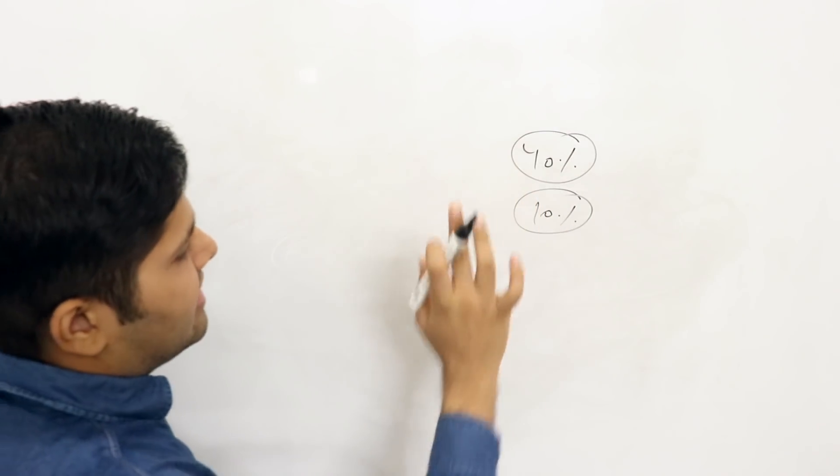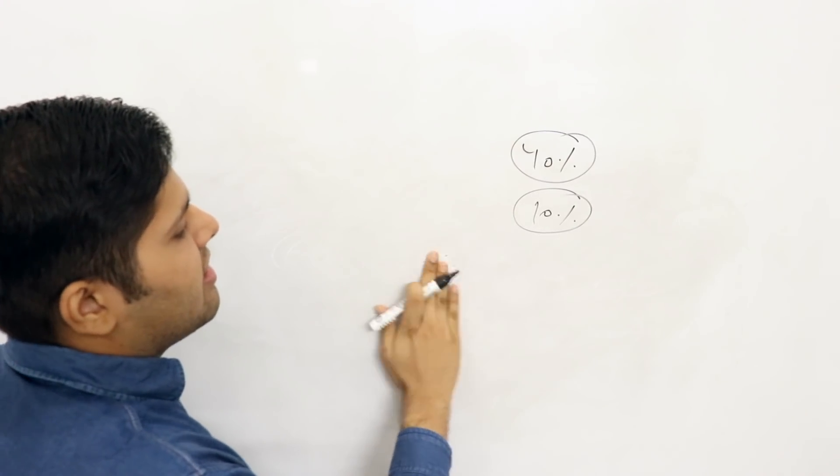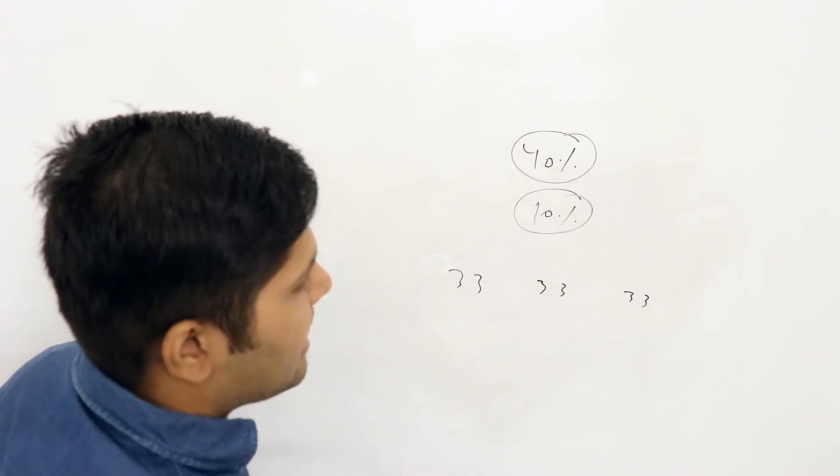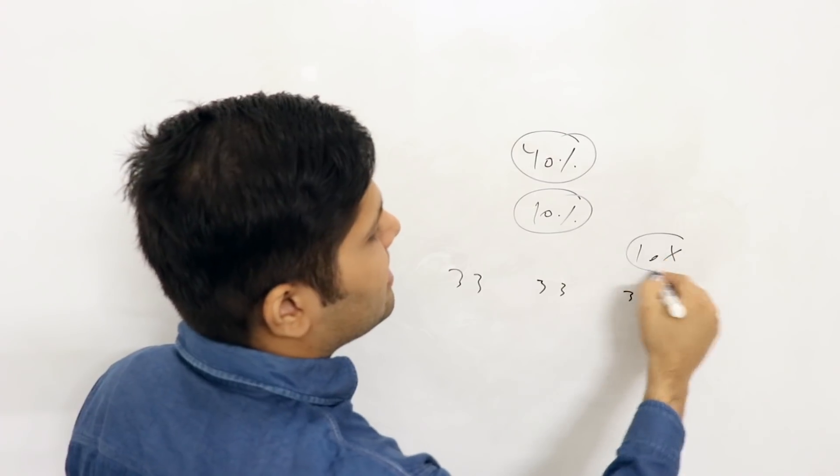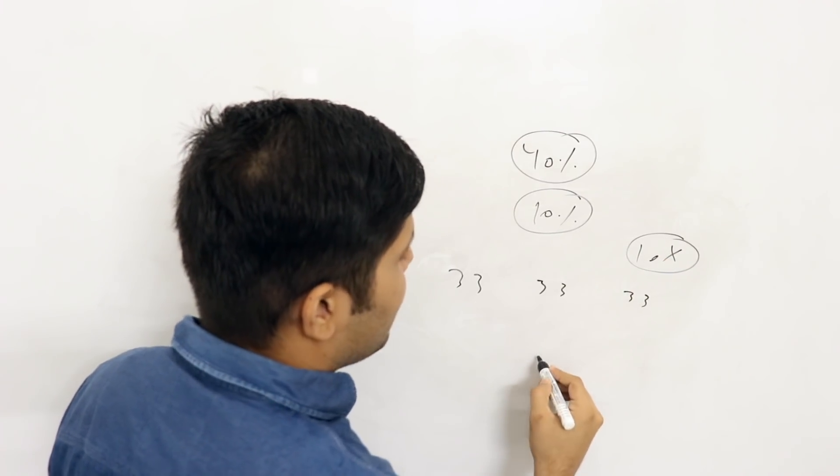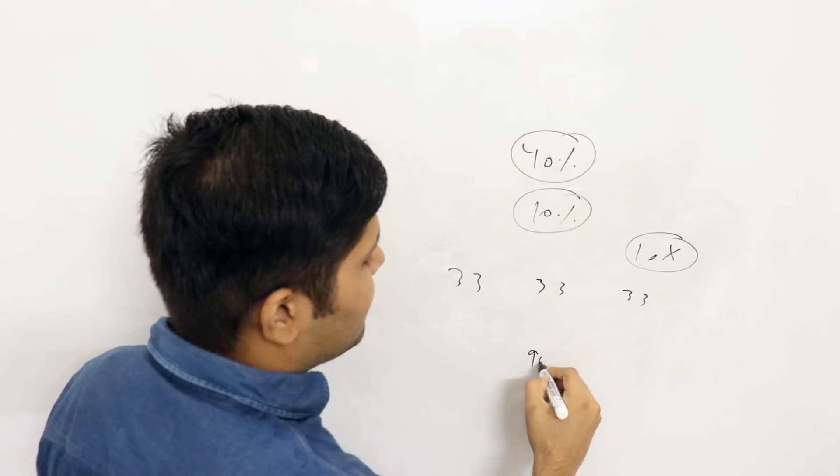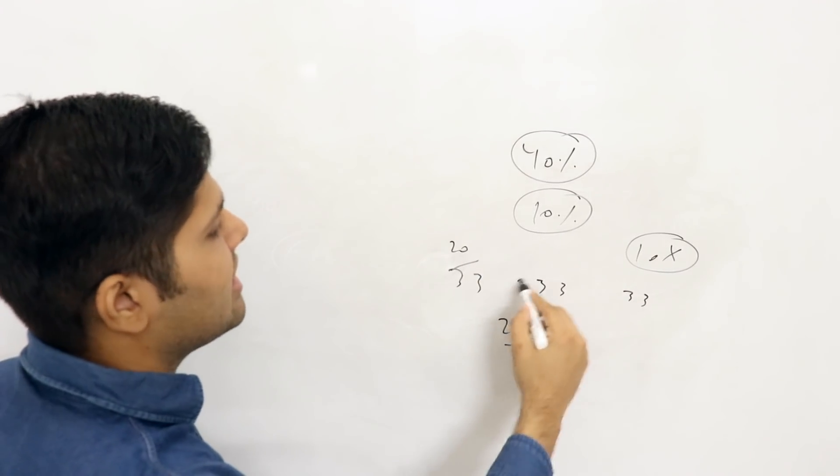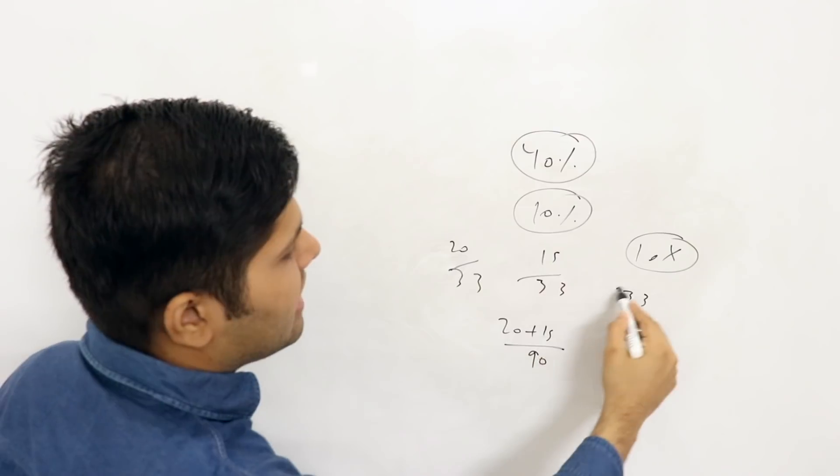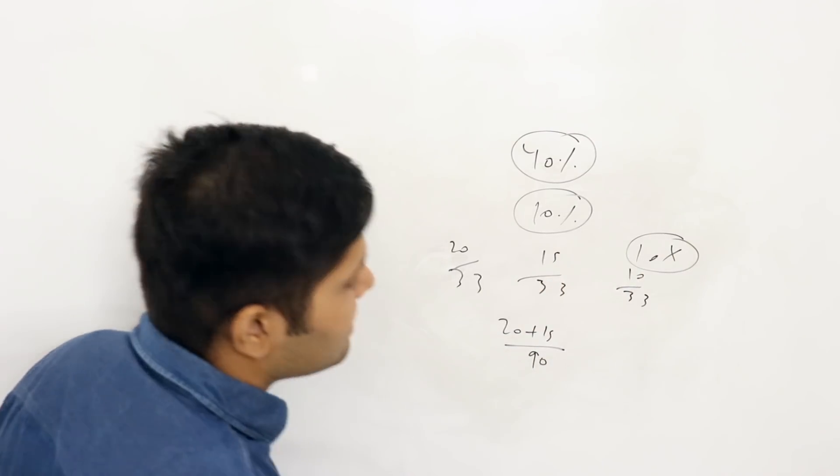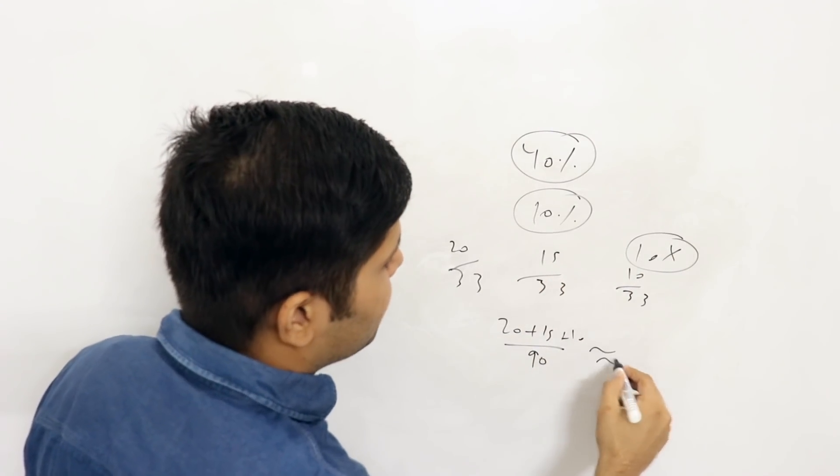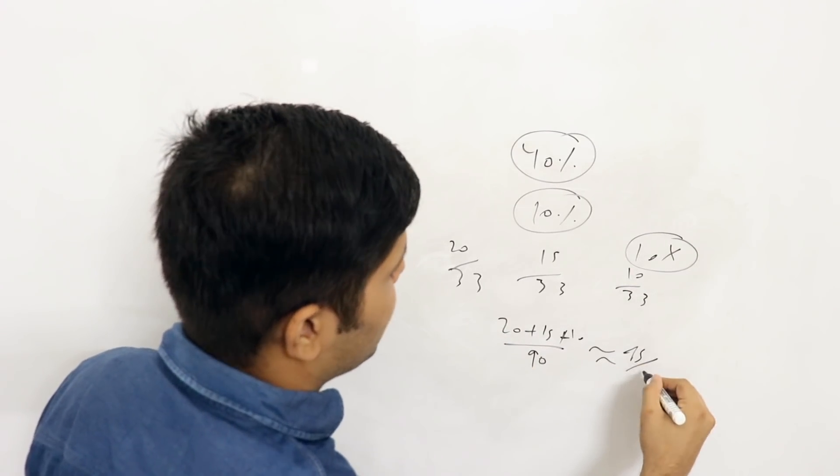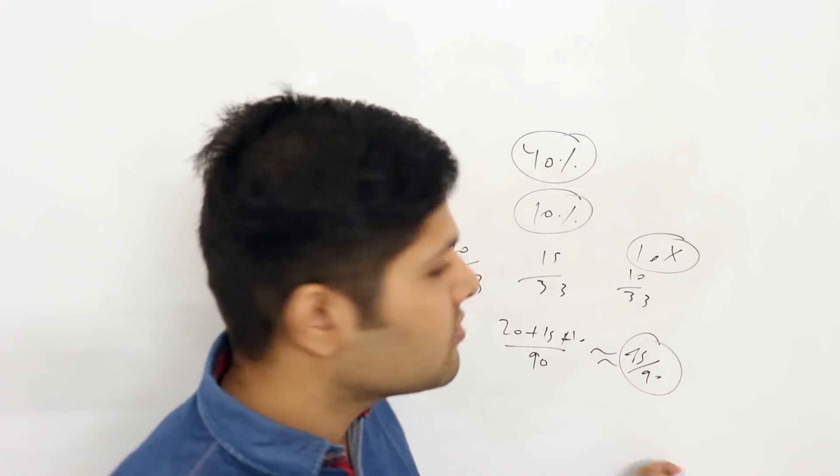Let's look at the exam - 33-33-33 weightage for physics, chemistry, and maths. So here we have 10 marks here, 20 marks here, 15 marks here, and 10 marks there. How many marks is this? If we talk about 30 or 45, let's say 50% marks - all the numbers are coming like that.